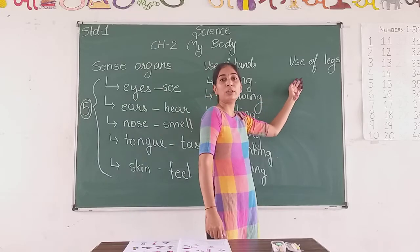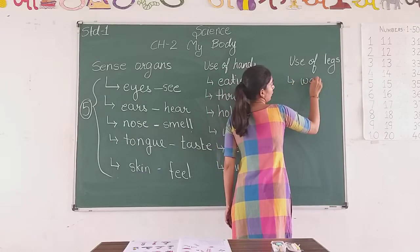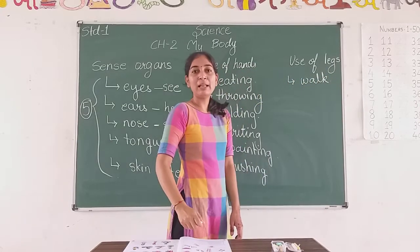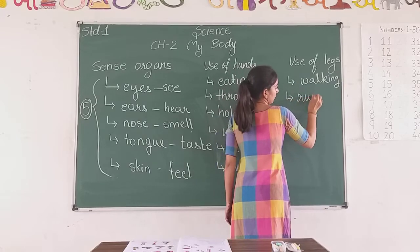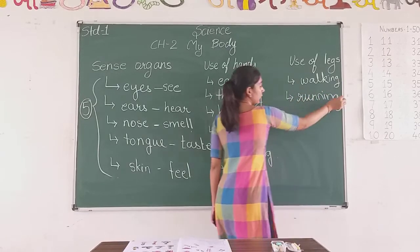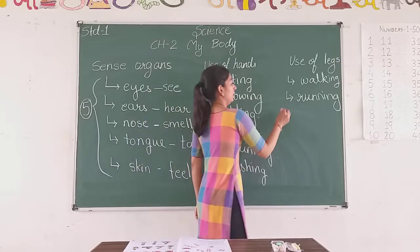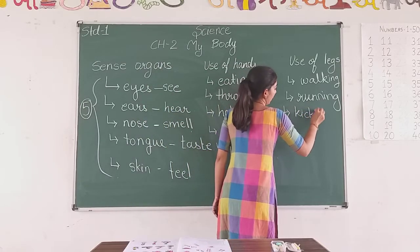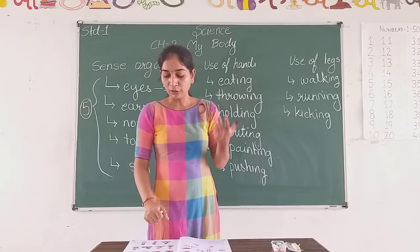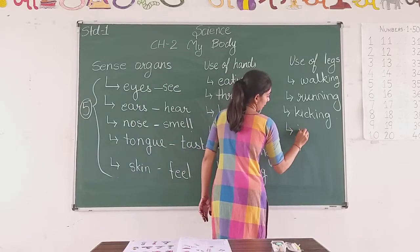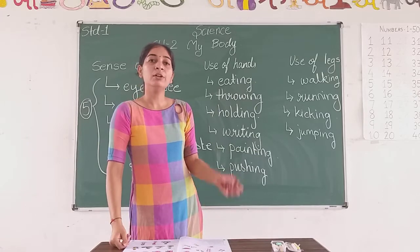Now let's look at the activities which you do with your legs. Legs help us to walk — so you do walking with your legs. Then running — legs help us to run. Next is kicking — if you want to kick a ball, you can only do it with your legs. Then jumping — jumping is also done with your legs.